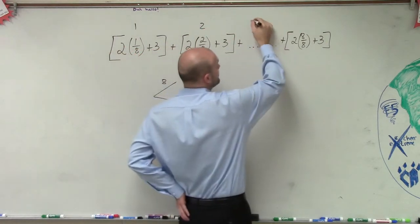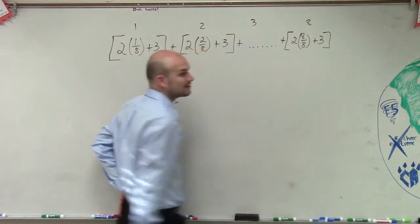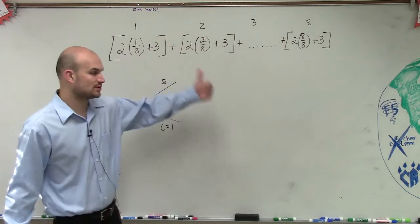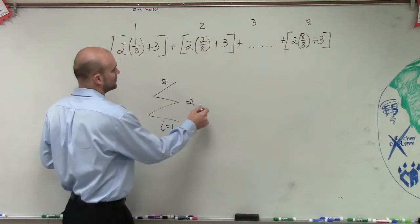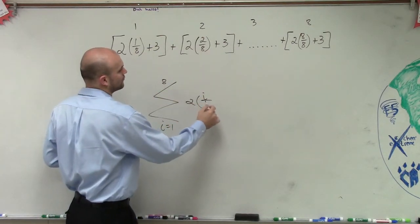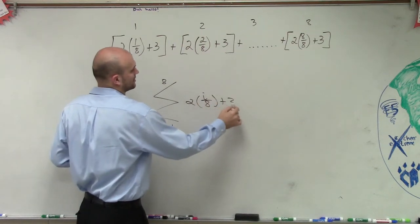That's the second term, third term, and this would be the eighth term. So even though we're adding 1, we're going to the next sequence, but our rule is just going to simply be 2 times i over 8 plus 3.